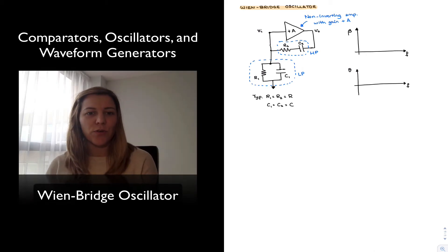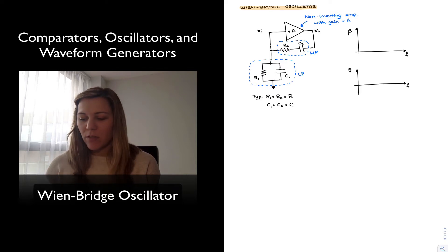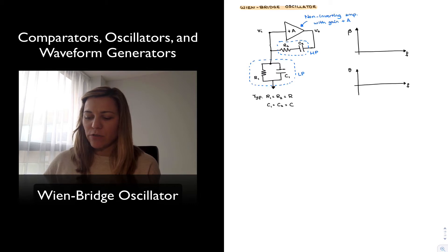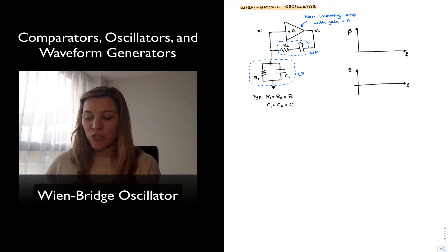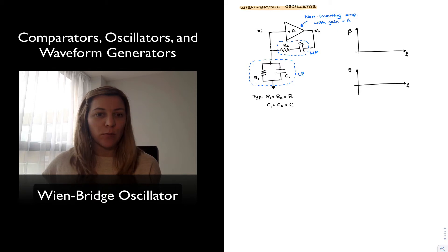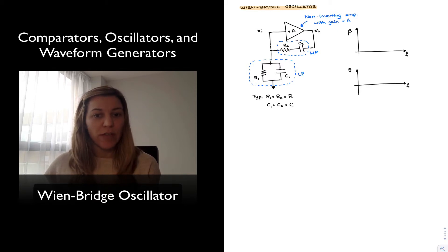Hello, in this video we're going to talk about a well-known and popular oscillator, the Weinbridge Oscillator. The Weinbridge Oscillator consists of a circuit with the following configuration: an amplifier, labeled plus A, to indicate it's a non-inverting amplifier with a gain of A.